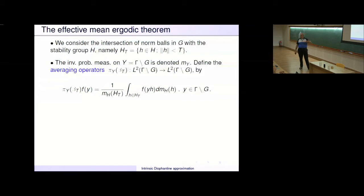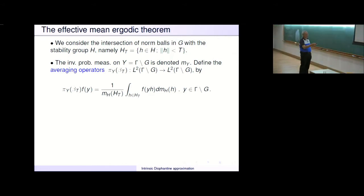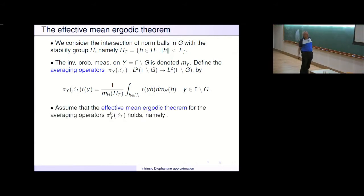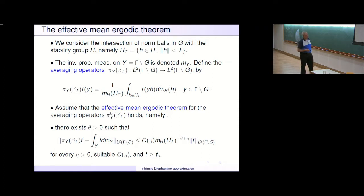It's the usual ergodic averaging operators. You have an orbit of H — the orbit of the point Y — and we sample the values of F on part of the orbit as h ranges over the set H_T. We flow in the H-orbit up to time T, sample the values of F, and average them by dividing by the total mass of H_T. We assume that the effective mean ergodic theorem for the averaging operators holds: there exists a positive theta such that the time averages minus the space average of F decay like a negative power of the volume.